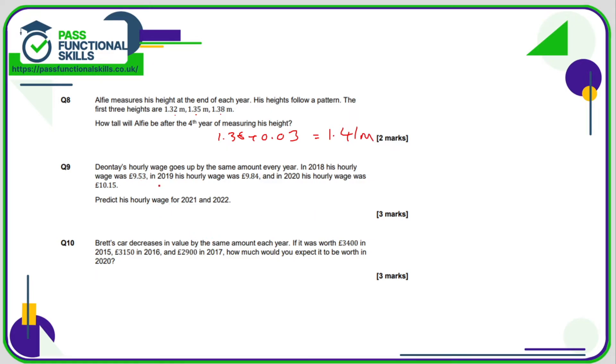So Deontay's hourly wage was 9.53, then 9.84, that's a difference of 31p, and if we add 31p onto 9.84, we do indeed get £10.15. So all I need to do is add 31p onto £10.15, and I get £10.46 for 2021.